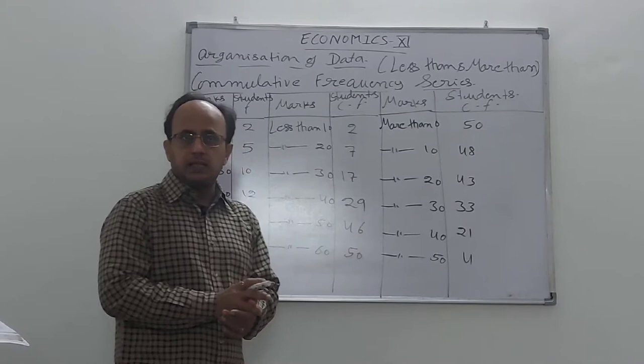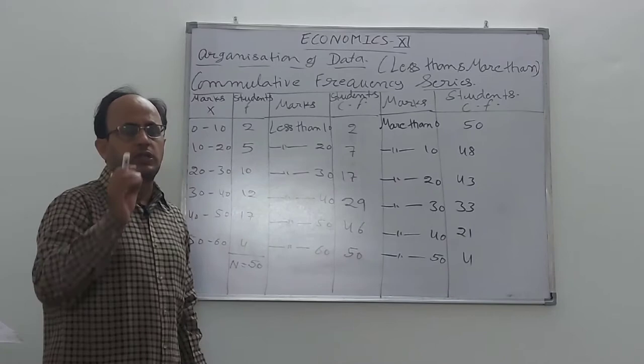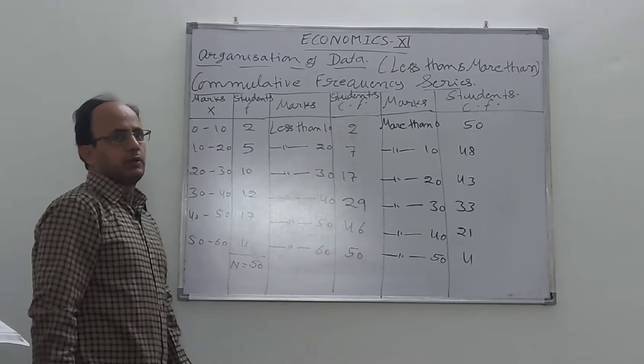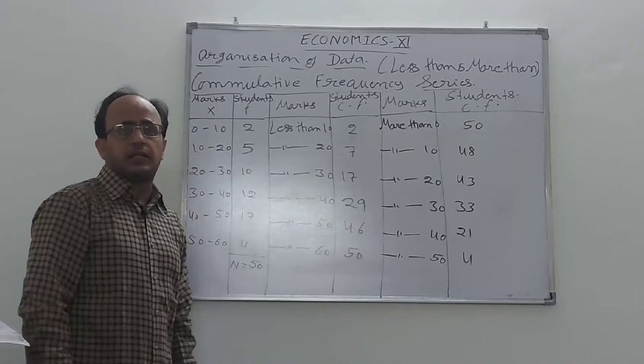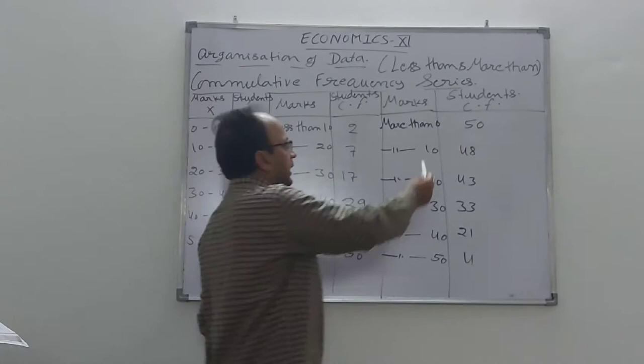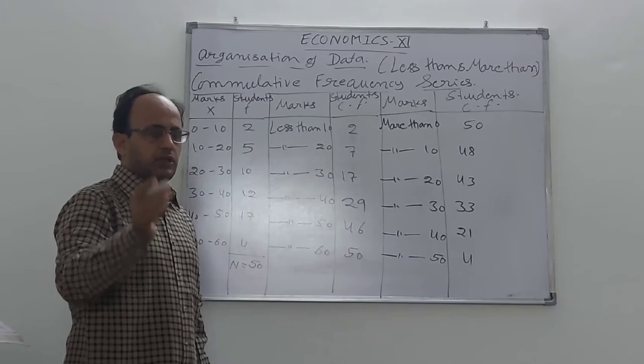Now we see the more than series — what it is, how we can change a continuous exclusive series into a more than series, and then how to convert it back. We take the same exclusive series: 0 to 10, 10 to 20, 20 to 30, 30 to 40, 40 to 50, 50 to 60. For the more than series, we take the lower values: more than 0, more than 10, more than 20, more than 30, more than 40, more than 50.